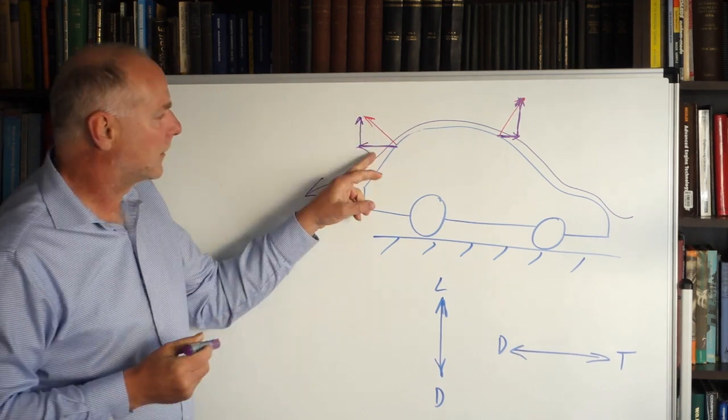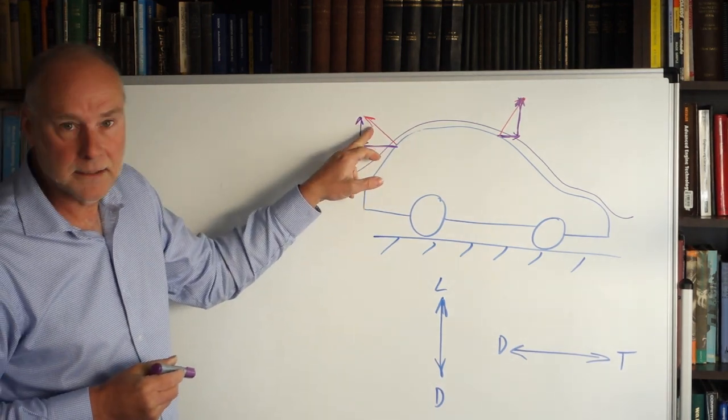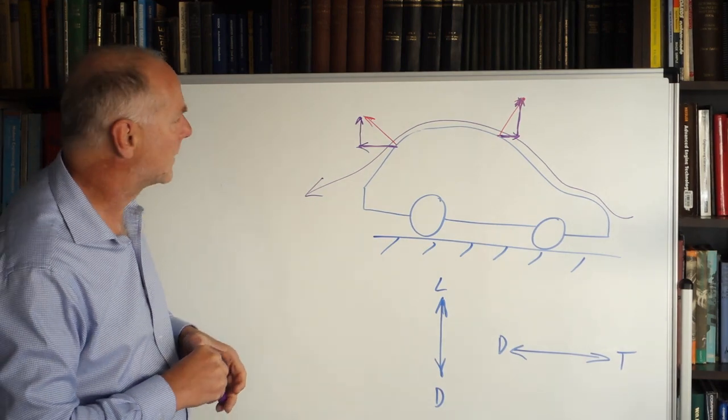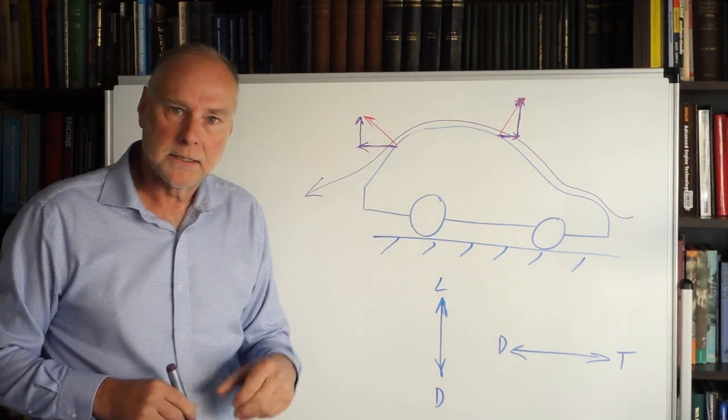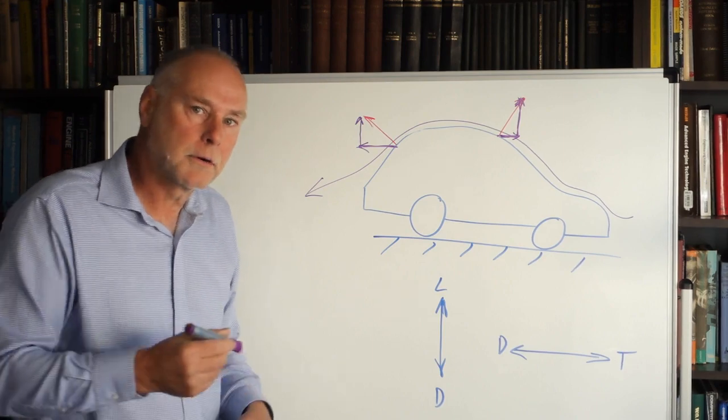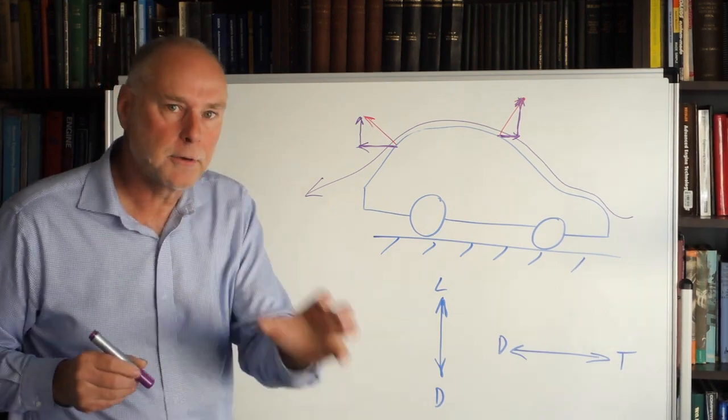We can see it's developing more drag than it is lift though the two are fairly close together. Now by drawing in arrows like this, working out what the horizontal component is, working out what the vertical component is,